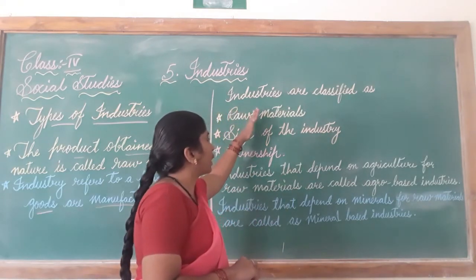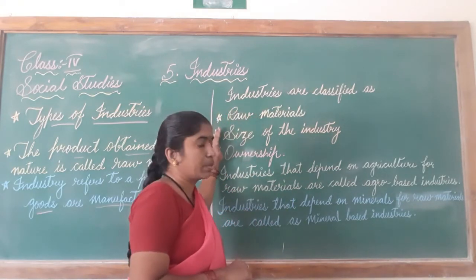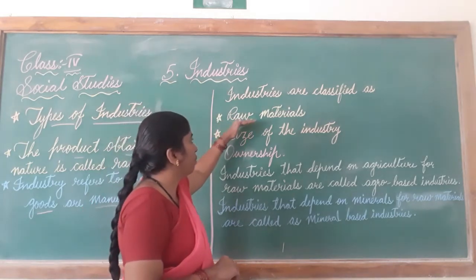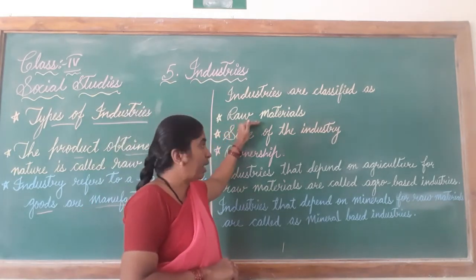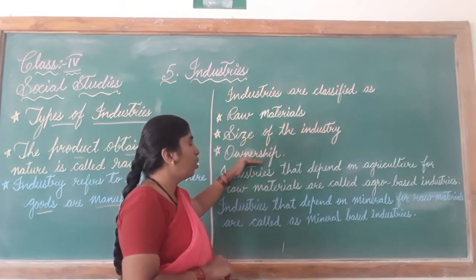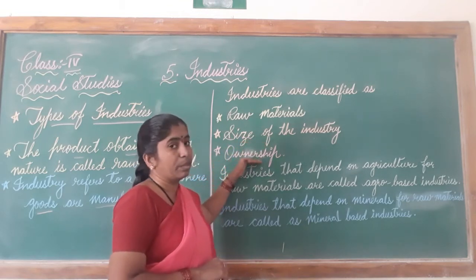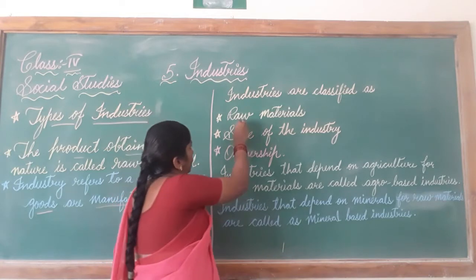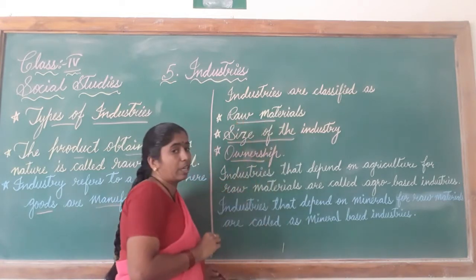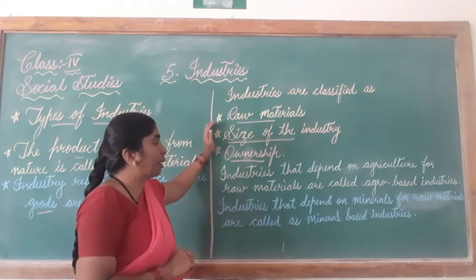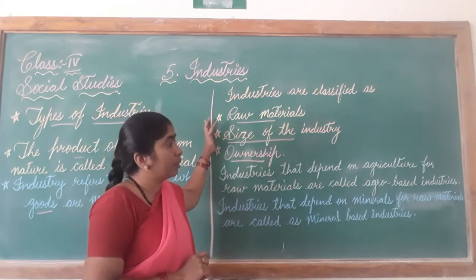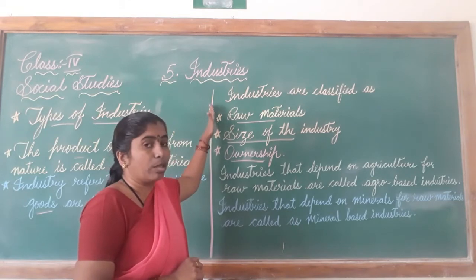Industries are classified into three types based on raw materials, the size of the industry, and the ownership. These are the three things on which we classify industries.